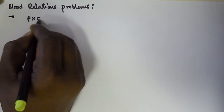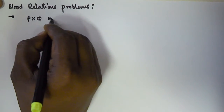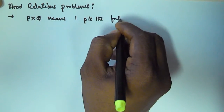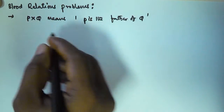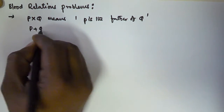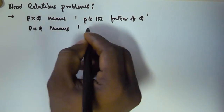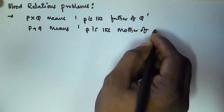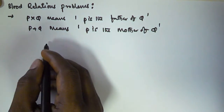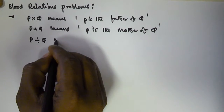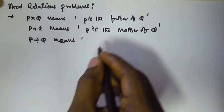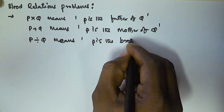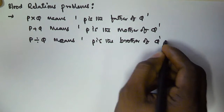The rules are given: P × Q means P is the father of Q, P + Q means P is the mother of Q, and P ÷ Q means P is the brother of Q.